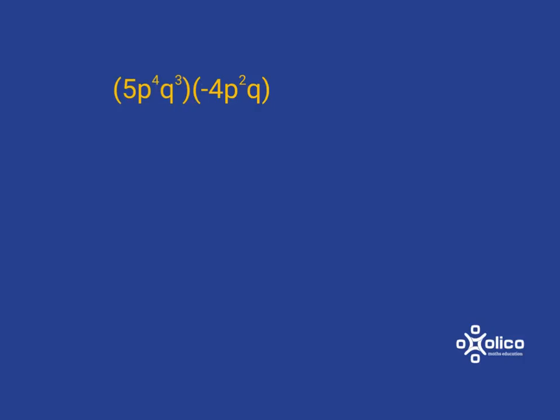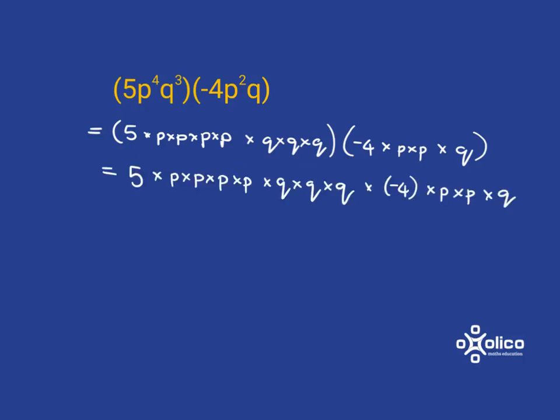So what do we have here? If I write it out, this is what I'm going to get. And at this point, I note that the fact that I've just got bracket with bracket means it's just multiplied, so really what I've got is a whole long string of things multiplied together.